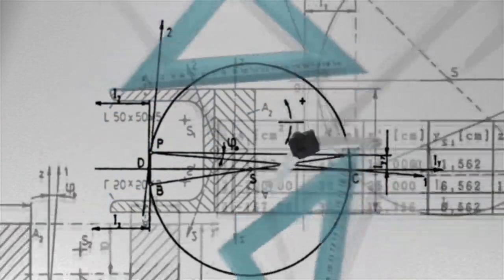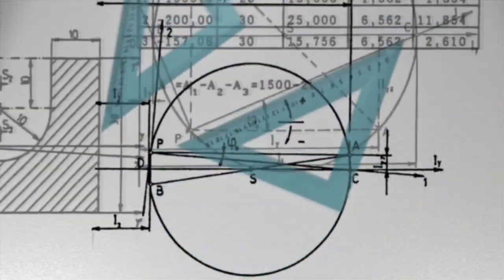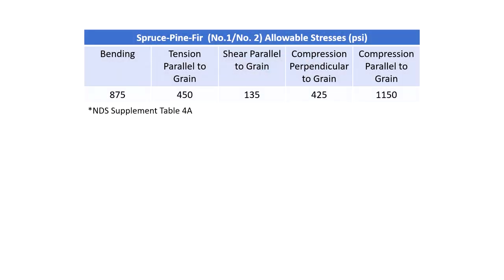So far we have discussed the strength of wood in relation to grain direction qualitatively, but we haven't yet considered it quantitatively. Consider the values shown here. We haven't introduced the NDS properly yet, but we will do so in later videos. For now, I just want to consider some sample values. These values come from Table 4A in the NDS Supplement and apply to spruce-pine-fir numbers 1 and 2. Just realize that these are the base stresses that the NDS allows for this type of species and grade of wood under the various types of loading shown.